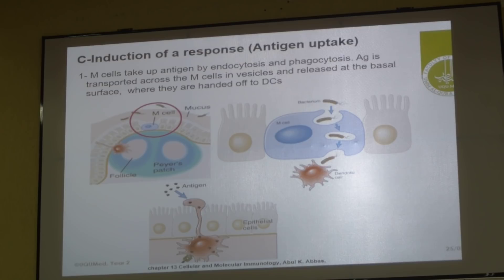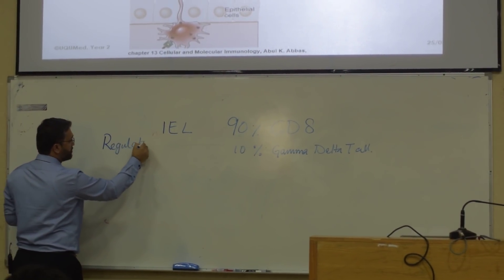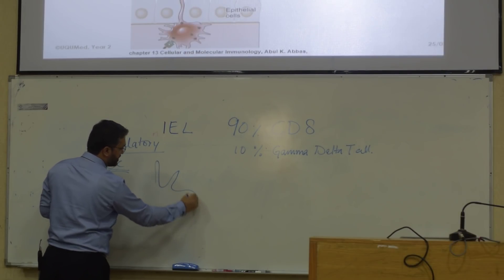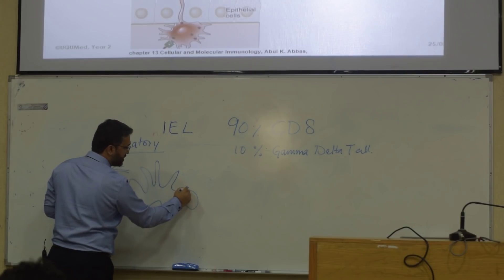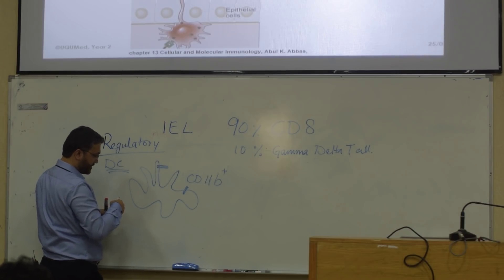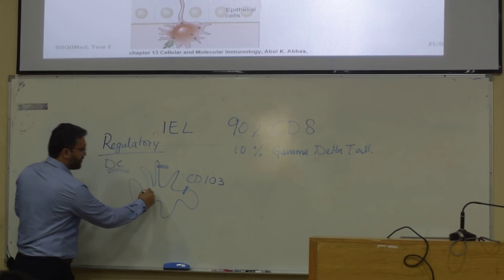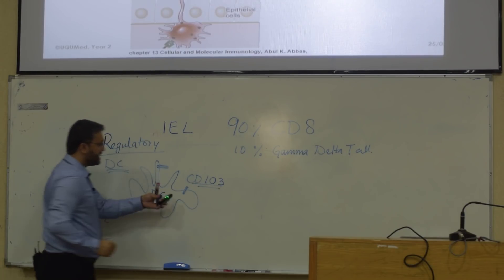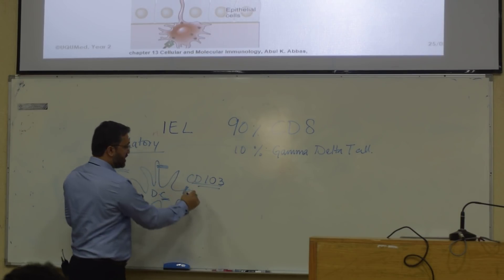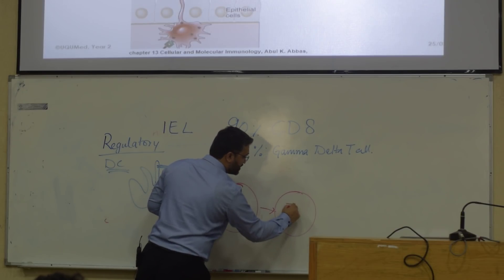There are two types of dendritic cells. One is called the regulatory dendritic cell. These regulatory dendritic cells have certain fixed receptors on their surface — they are CD103 positive. So dendritic cells which have CD103 are regulatory in nature. Whenever they capture the antigen, they will result in a regulatory T cell response — calm down the immune response. They will always present the antigen to the T cell and the T cell will be converted into Treg.